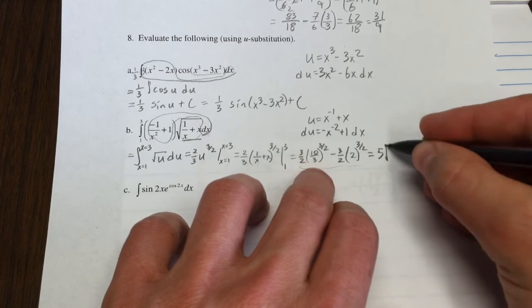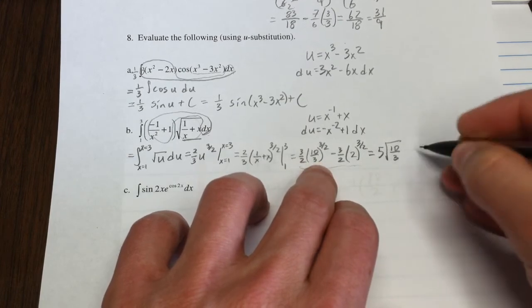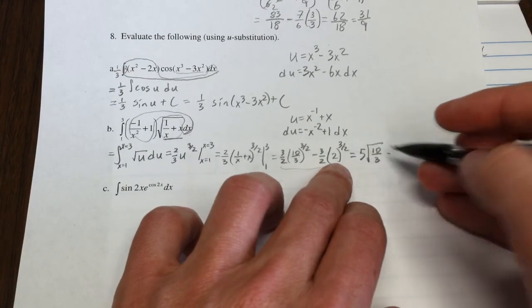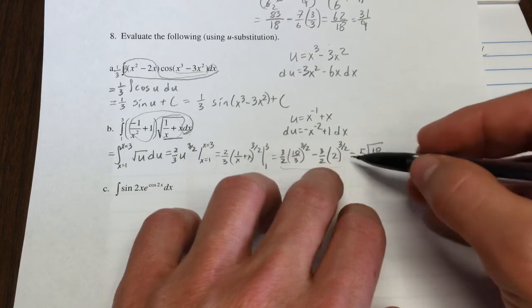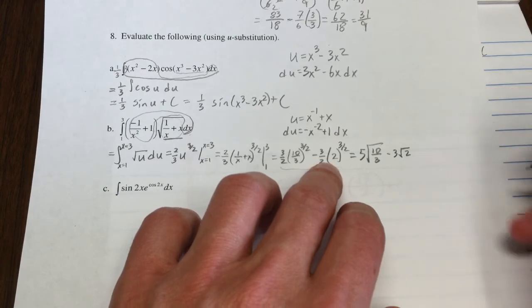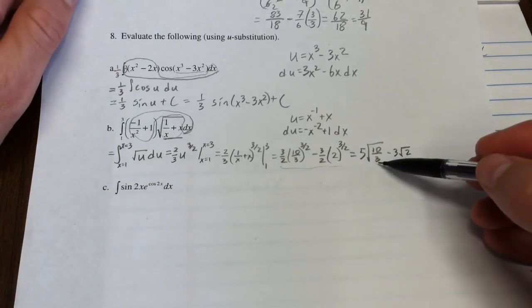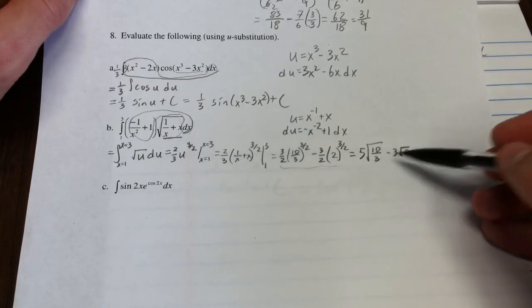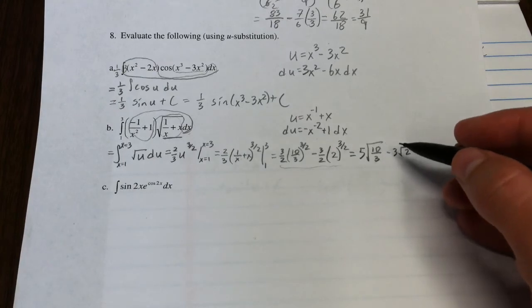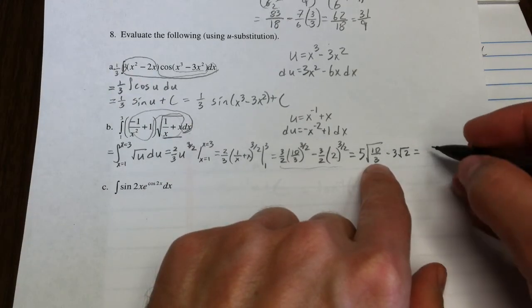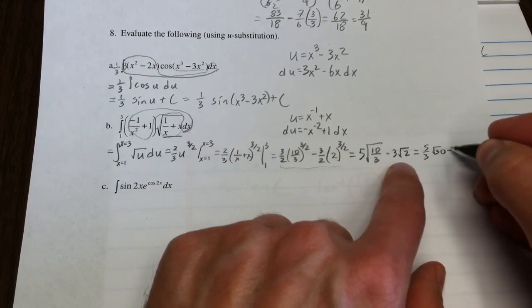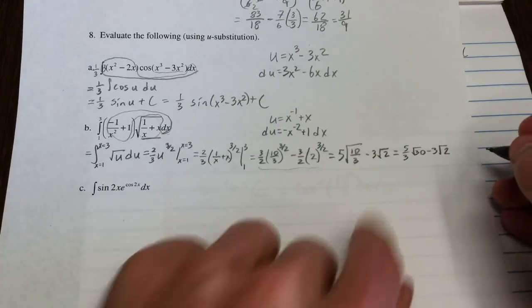So we'd have 5 root 10 over 3 minus, if we took this to the three-halves, that would be 2 root 2. The 2s would cancel. So minus 3 root 2. That wouldn't be all bad. And if you really wanted to be obsessive-compulsive, you could get that out of the denominator. I guess I would multiply by root 3 over root 3. So that would give me 5 thirds root 30 minus 3 root 2. Isn't that grand?